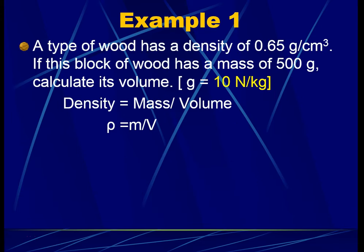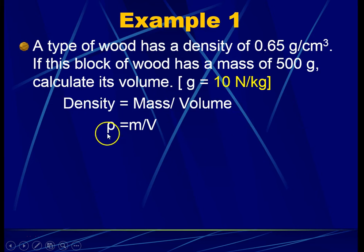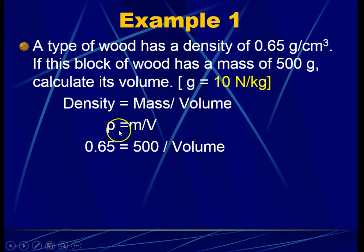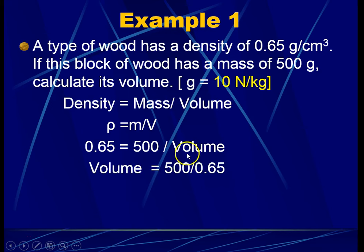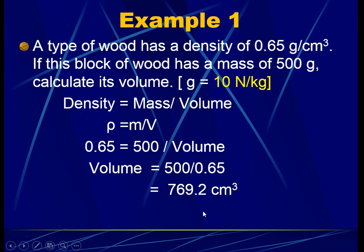Let's look at this example: if a type of wood has a density of 0.65 g/cm³ and a mass of 500 grams, what is its volume? Starting with the formula rho equals M divided by V, substituting: 0.65 equals 500 divided by V. Rearranging algebraically, V equals 500 divided by 0.65, giving us 769.2 cm cube.